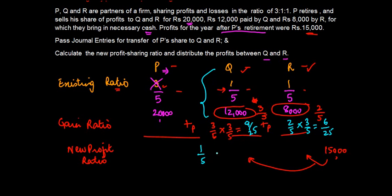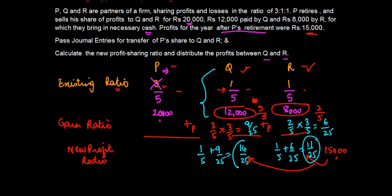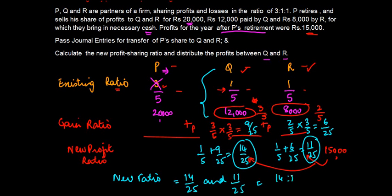Q's new ratio: 1/5 plus 9/25. Solving: 5/25 plus 9/25 equals 14/25. R's new ratio: 1/5 plus 6/25 equals 5/25 plus 6/25 equals 11/25. So the new profit sharing ratio is 14/25 for Q and 11/25 for R, or simply 14:11.